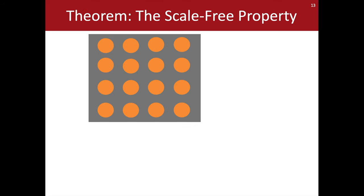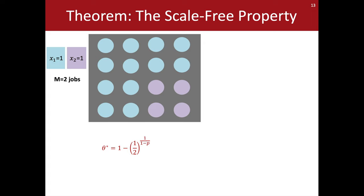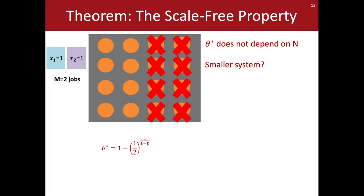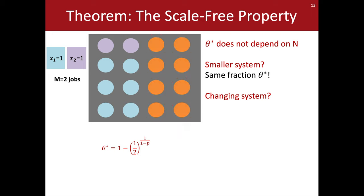It's easiest to see the scale-free property via an example. We've already seen that given two jobs both of size one, we can compute the optimal allocation theta star. Recall that if p is 0.5, the optimal allocation is to give 75% of the servers to the blue job and 25% to the purple job. The key observation is that the optimal fraction theta star does not depend on n — for example, if we consider a smaller system of just eight servers, we would divide these servers the same way, giving 75% to the blue job and 25% to the purple job.